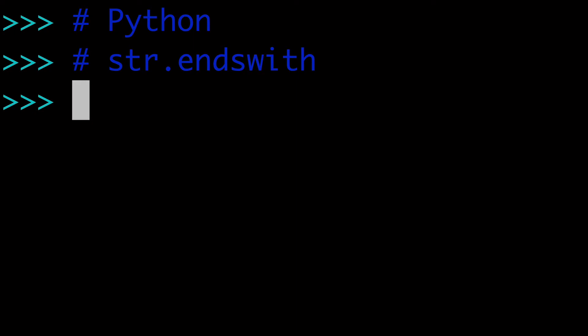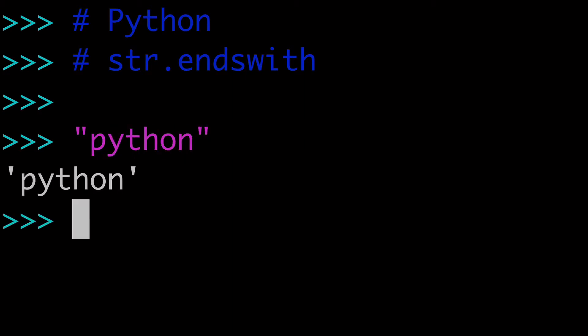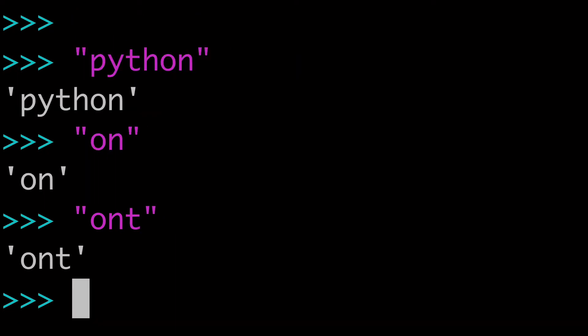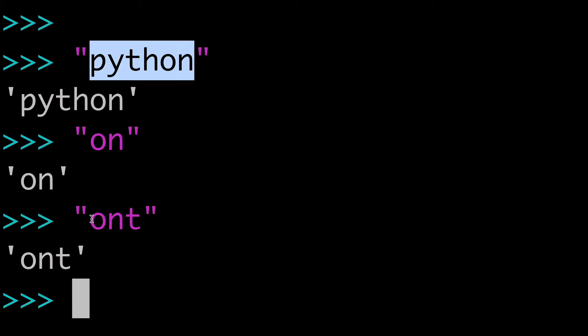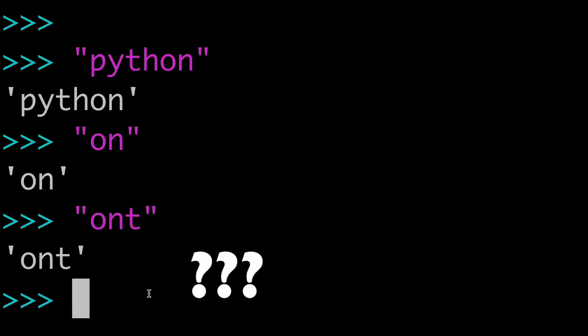In this video, we're covering the endswith string method in Python. Let's start by creating a scenario. Say I had a string like Python, and I wanted to see if this string ends with another string — like 'on' or 'ont'. Does Python end with 'on'? Does Python end with 'ont'? How would I do that?